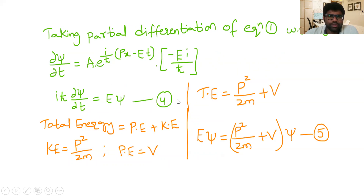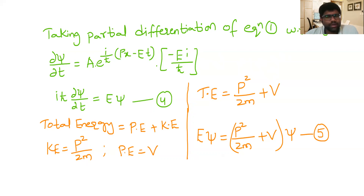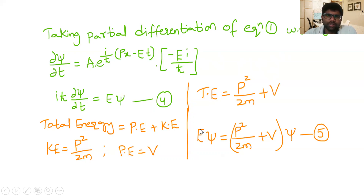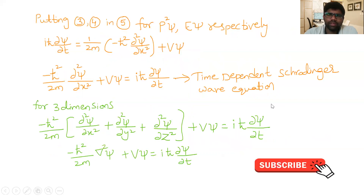Total energy is the sum of kinetic energy and potential energy. Kinetic energy is p²/2m, since momentum p = mv gives KE = p²/2m. Potential energy is V. So total energy: E = p²/2m + V. Multiplying both sides by ψ gives E·ψ = (p²/2m)·ψ + V·ψ. This is equation 5.